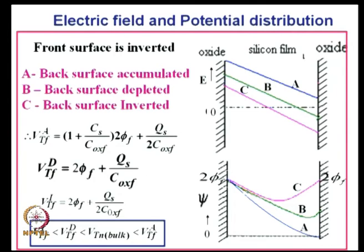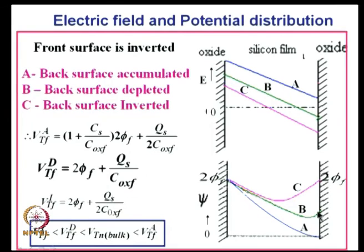This shows in the electric field plot: field is highest with back channel accumulated, lower when depleted, and lowest when both channels are inverted. Similarly, the threshold voltage is highest for accumulated, intermediate for depleted, and lowest when both channels are inverted. Reducing doping makes this even lower. The potential distribution shows 2φ_f at the front surface, with the minimum at the center for the symmetric inverted case.